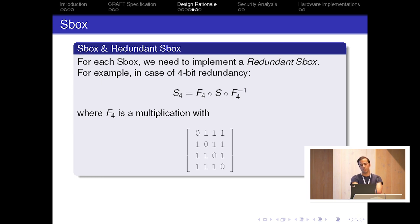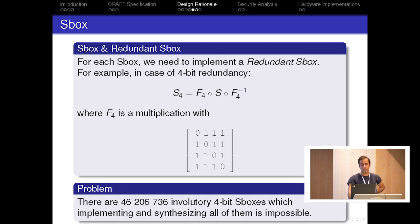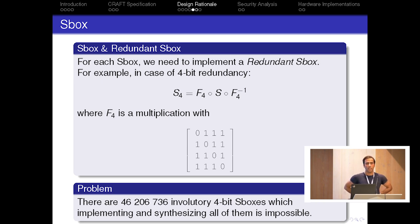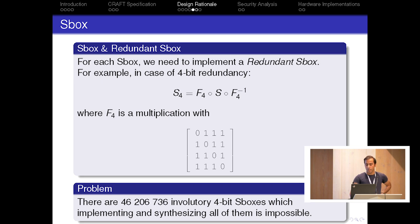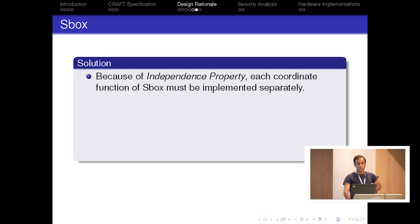There is a problem if we search through all S-boxes — there are about 46 million involutory S-boxes and implementing and synthesizing all of them is not possible. What we did is take benefit of the independence property, which says each coordinate function of the S-box must be implemented separately. This means the implementation cost for the S-box and its redundant counterpart is the sum of area sizes for each coordinate function.